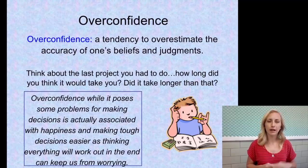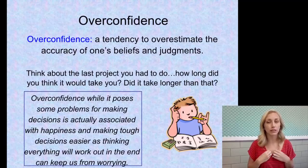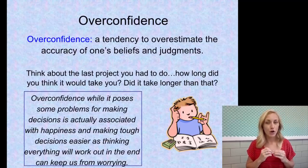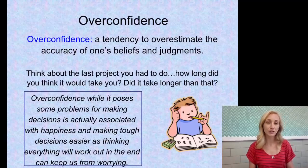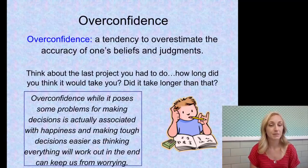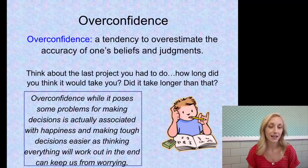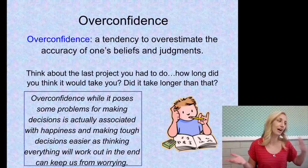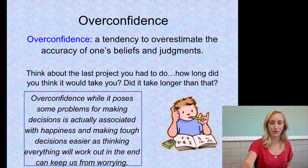Overconfidence is the tendency to overestimate the accuracy of one's beliefs and judgments. Think about the last project you had to do — how long did you think it would take? Did it take longer? While overconfidence poses some problems for decision-making, it is actually associated with happiness and making tough decisions easier, since thinking everything will work out can keep us from worrying. So a positive outcome can somewhat outweigh the downsides of overconfidence.